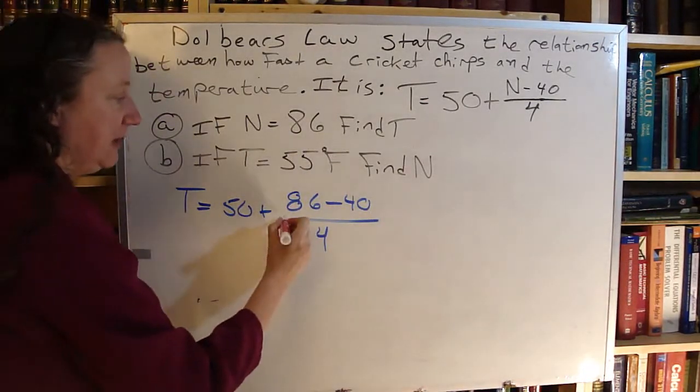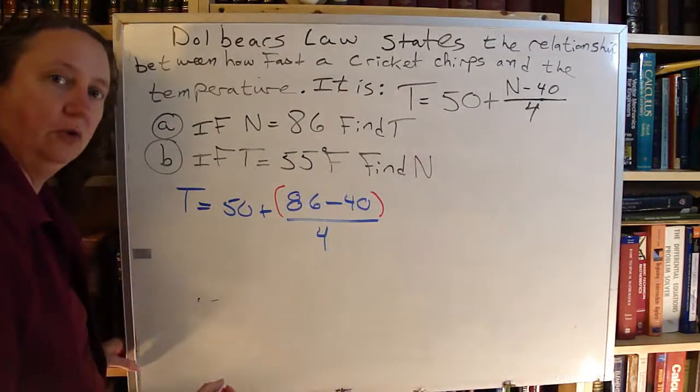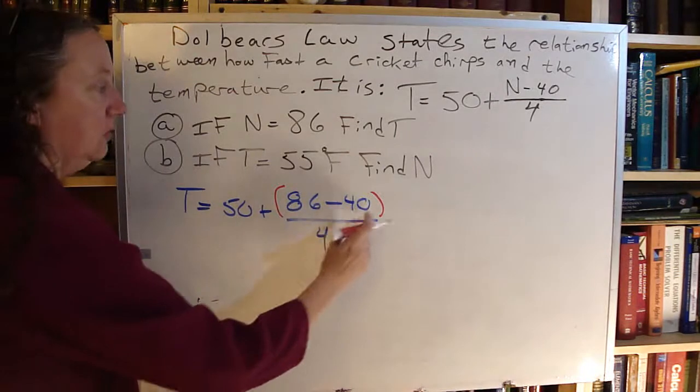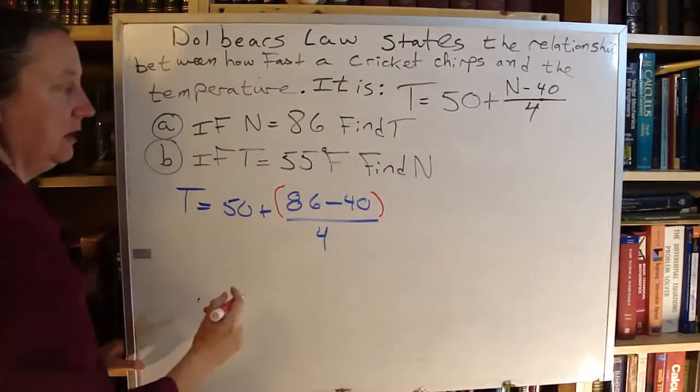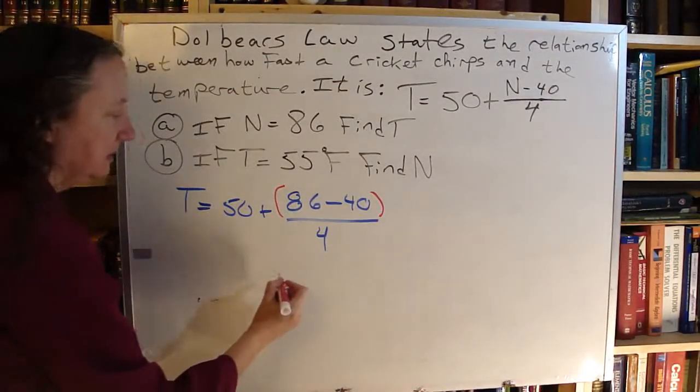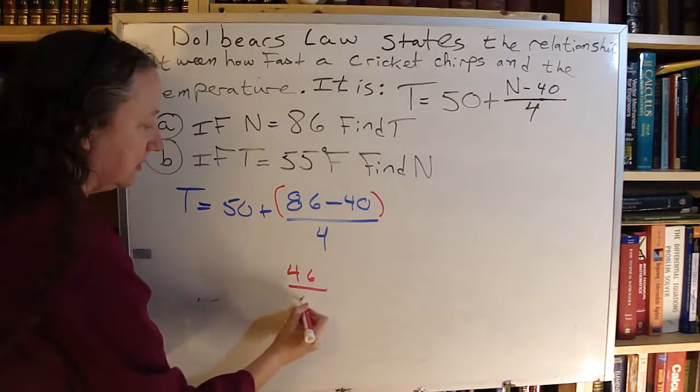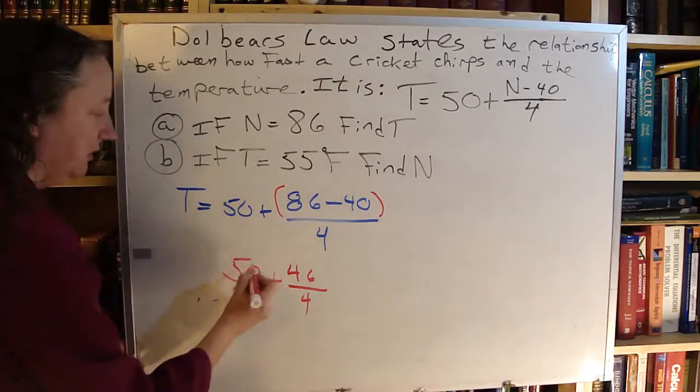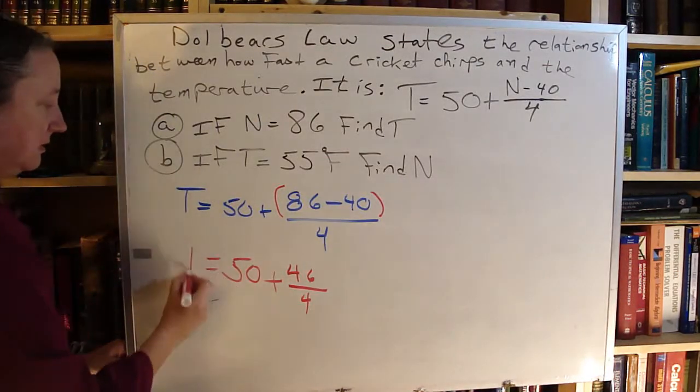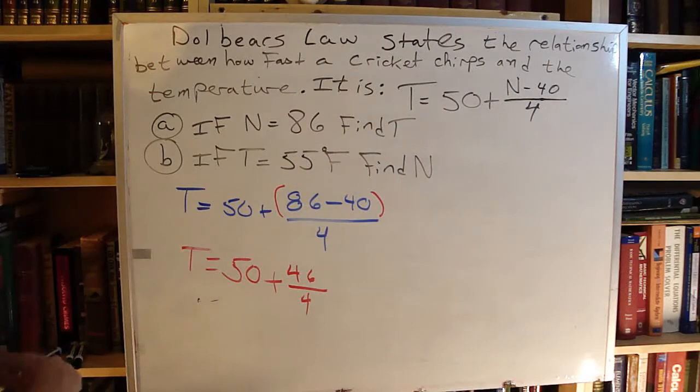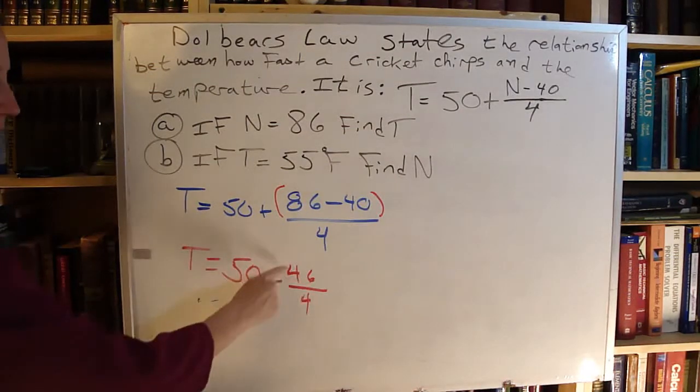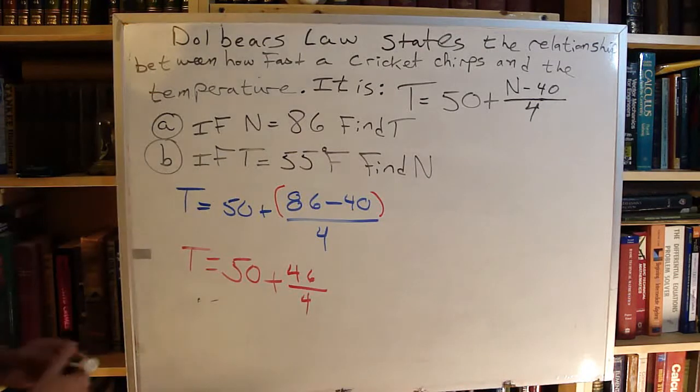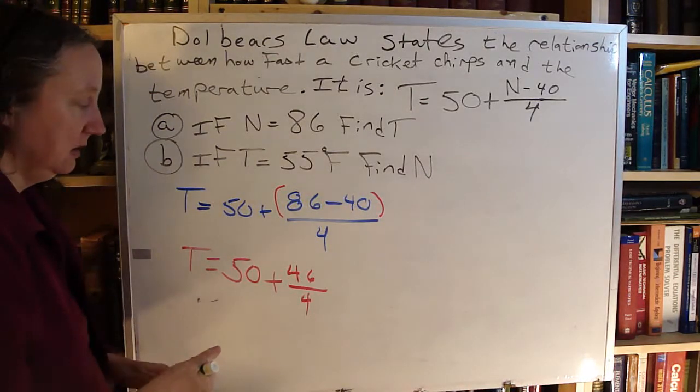So because I have that giant fraction bar, that means I have an understood set of parentheses at the edge of it. So I need to do that first. 86 minus 40, that gives me 46. Carry the rest of the problem down. Now I have to figure out what 46 divided by 4 is. Type it on your calculator. 11.5.